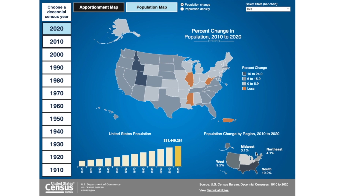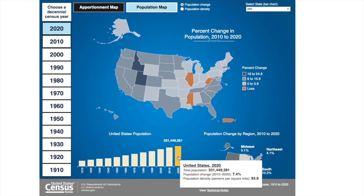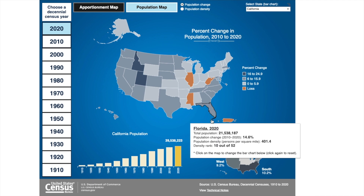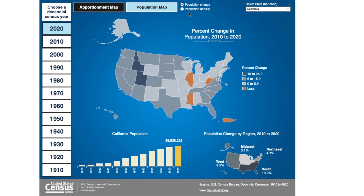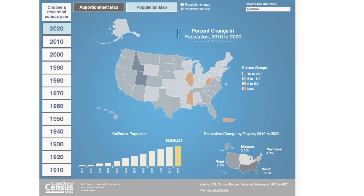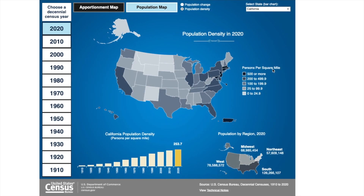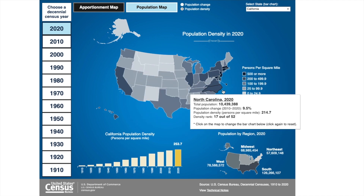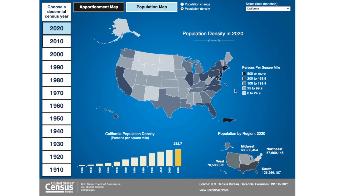You can also see how the population of the United States has changed over time. Now let's look at population change for a specific state — I will select California. And if you would like to see the population density for California, you can switch from population change to population density. This map is now showing us the number of persons per square mile in each state. The map is interactive and you can move your cursor on top of it to see data for each state. If you would like to see data just for California, look at the graph and you'll see the population density for California between 1910 and 2020.